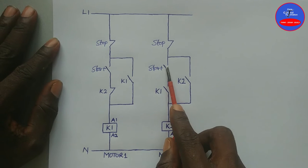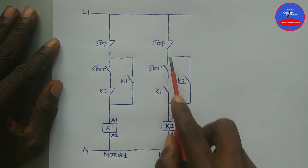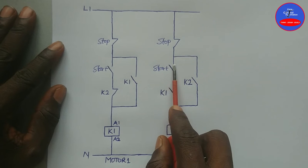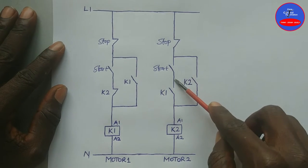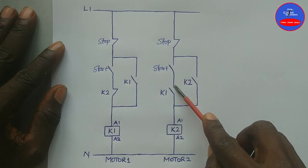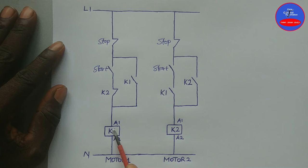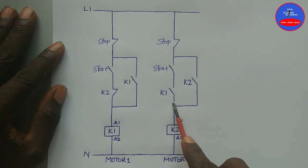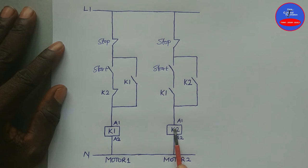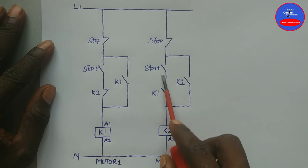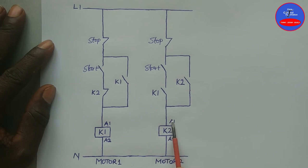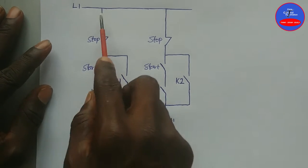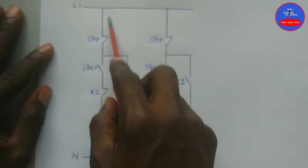In case you want to start Motor 2 first, let's see what happens when you press on the start button. Current will flow through to this point, but when it gets here, because K1 is not energized, there is no way the current can continue to flow through to energize K2 or Contactor 2. This is the main reason why Motor 2 can never be started until Motor 1 is running.